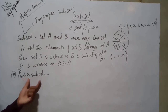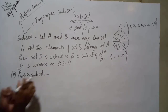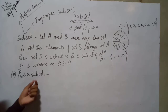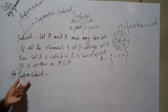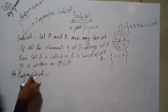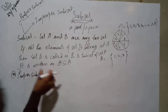First we define proper subset. What is a proper subset? A proper subset is defined as: if all the elements of set A belong to set B, and in set B there exists at least one more element than set A, then set A is called a proper subset of set B.